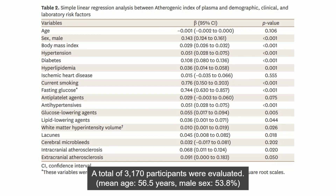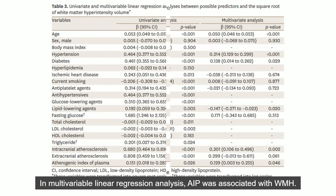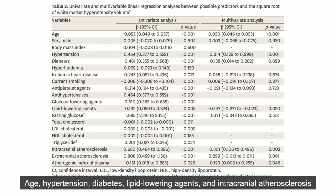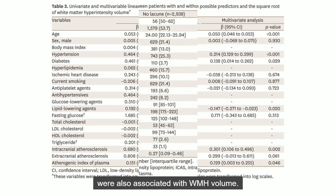A total of 3,170 participants were evaluated. In multivariable linear regression analysis, AIP was associated with white matter hyperintensity. Age, hypertension, diabetes, lipid-lowering agents, and intracranial atherosclerosis were also associated with white matter hyperintensity volume.